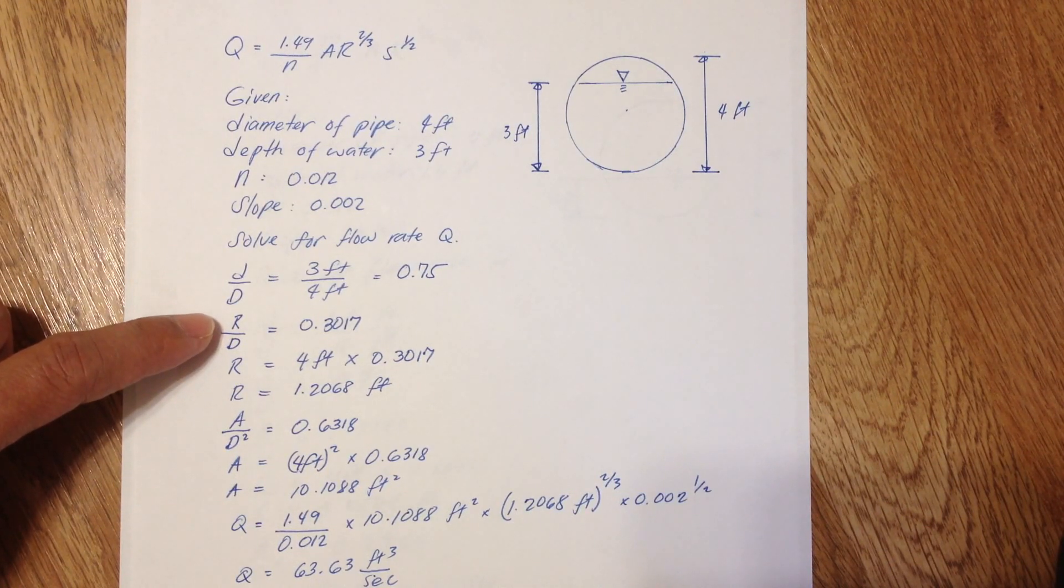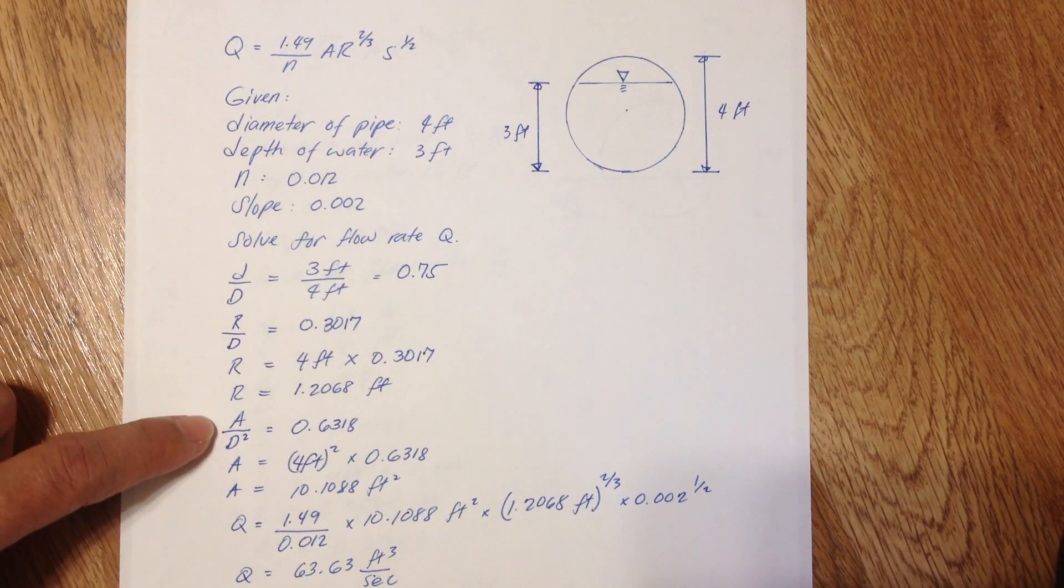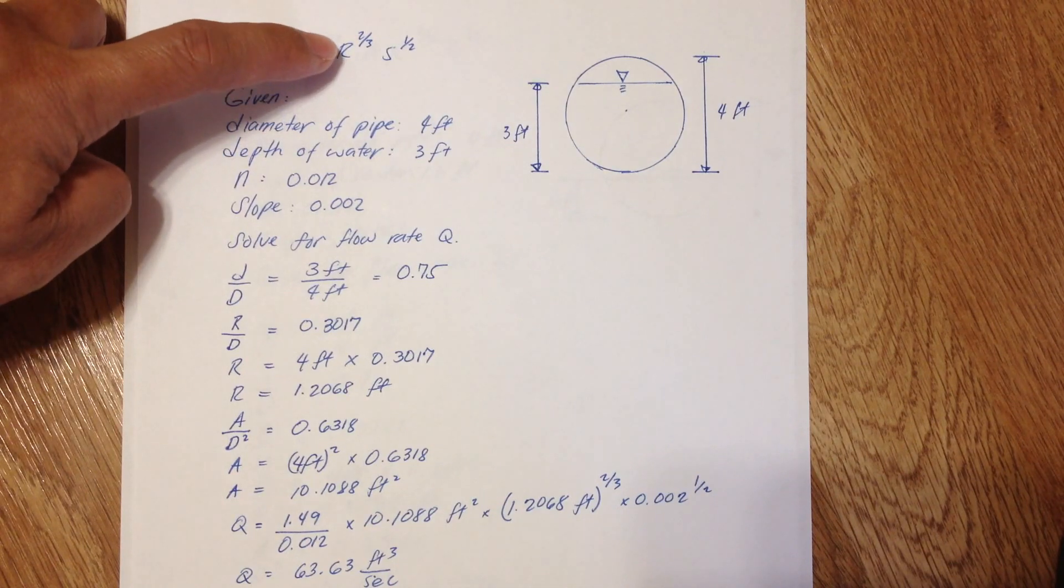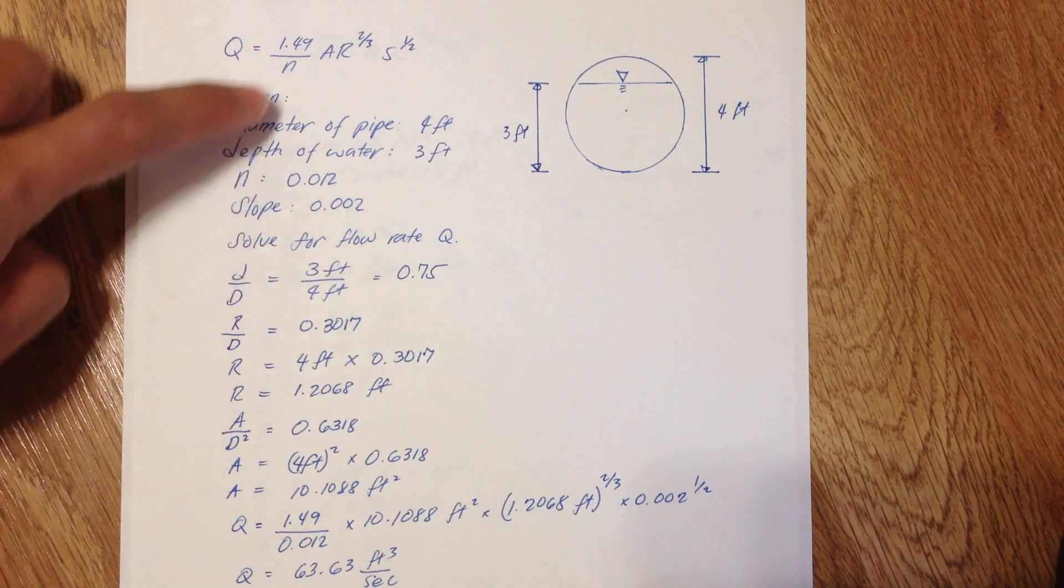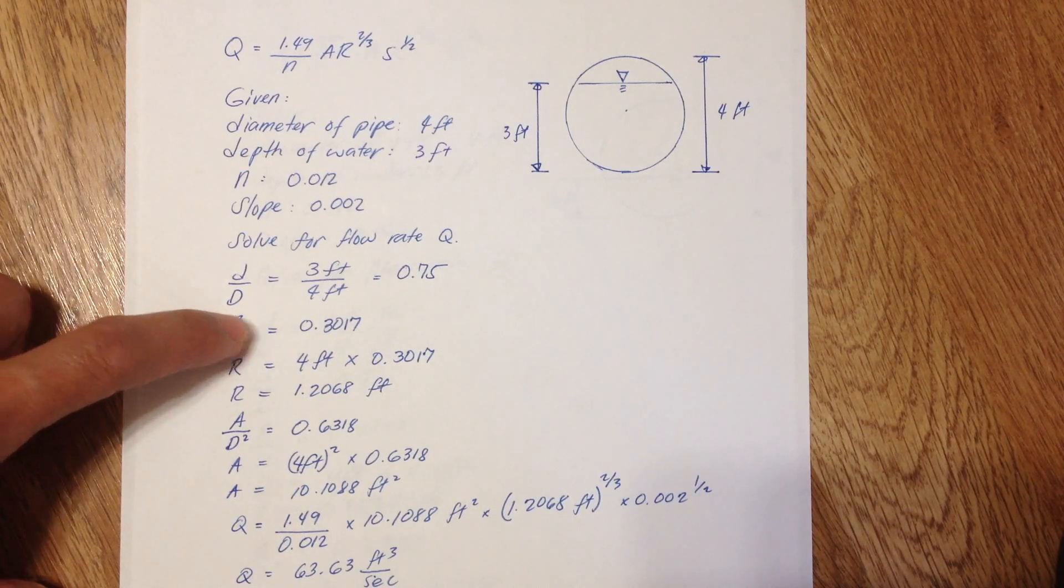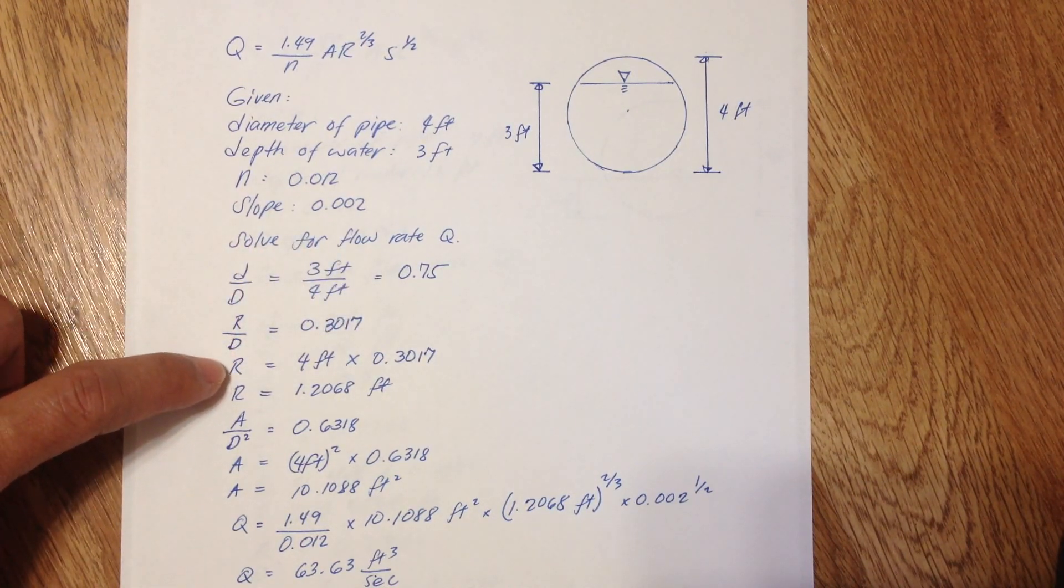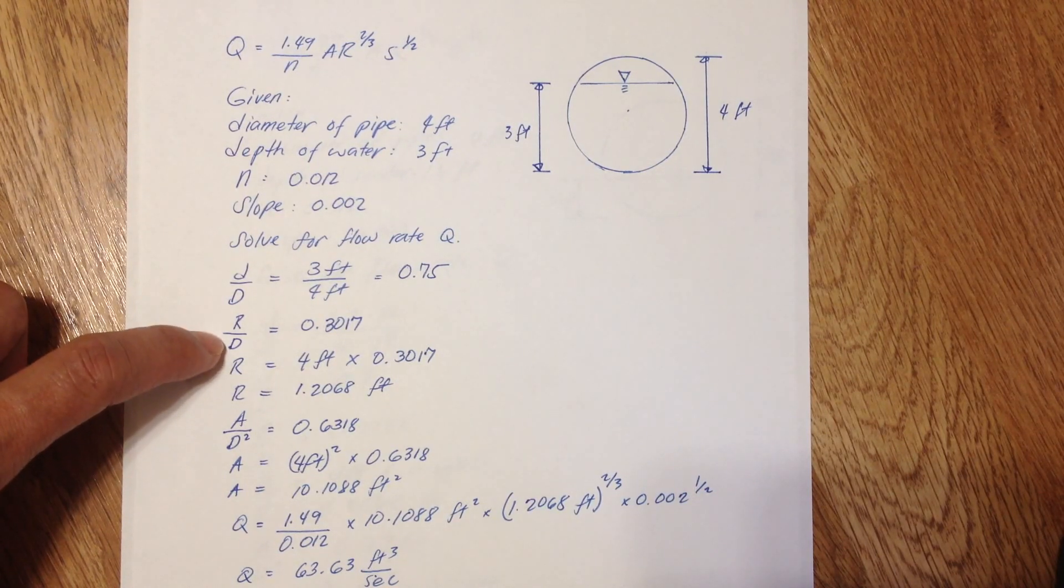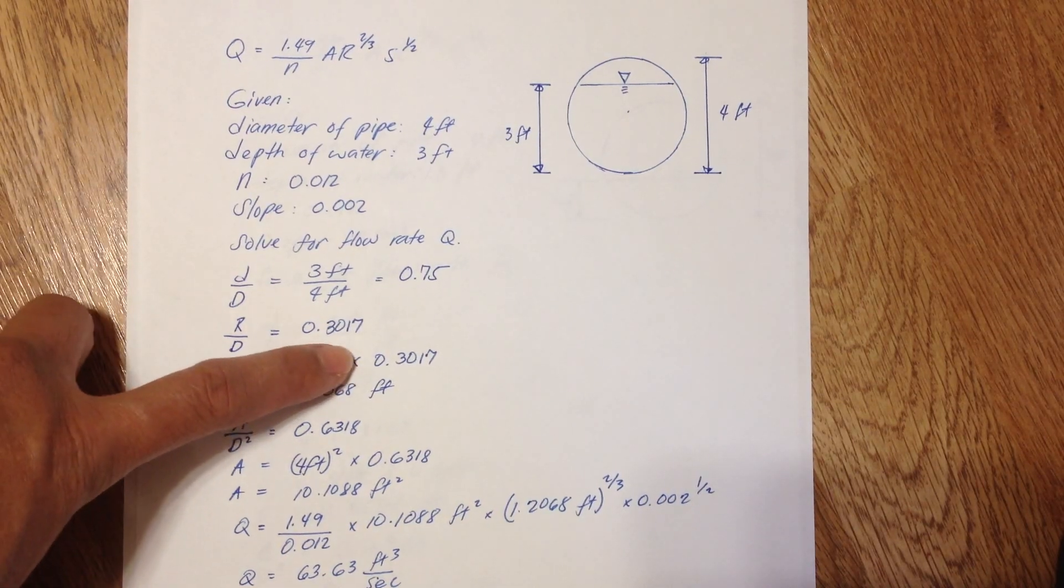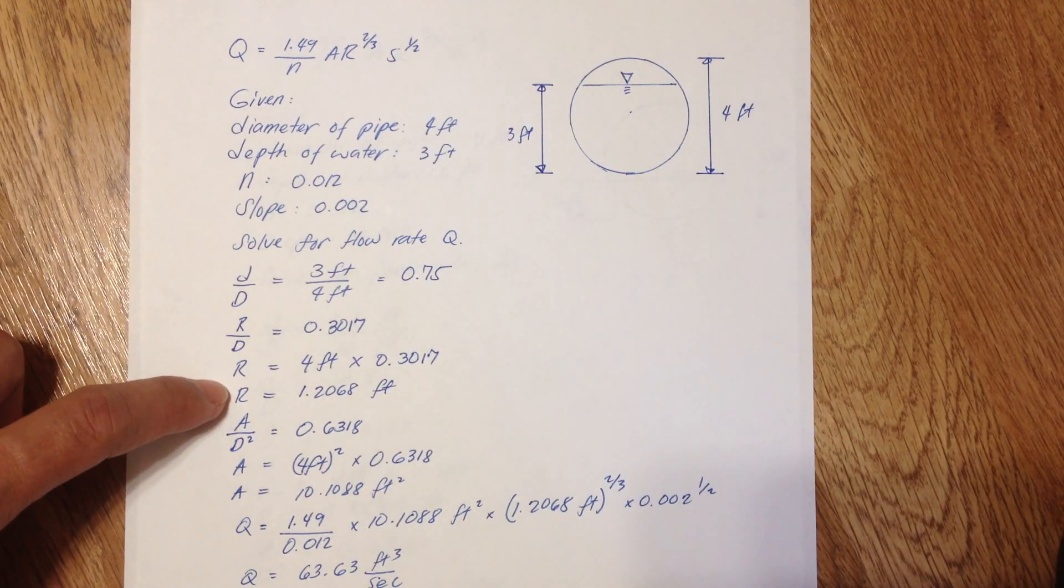Now in the table at the appendix of the CERM, look horizontally from D over D and you'll find the corresponding value of R over D and A over D squared. These are the two values that we need to solve the flow rate because R is part of the equation, which is the hydraulic radius, and A is also part of the equation, which is the area of water. Now R over D is 0.3017 that corresponds to this value 0.75, so it's easy to calculate the hydraulic radius. Since we have the given value of the diameter of the pipe which is 4 feet, multiply that by 0.3017 and we get the hydraulic radius of 1.2068 feet.